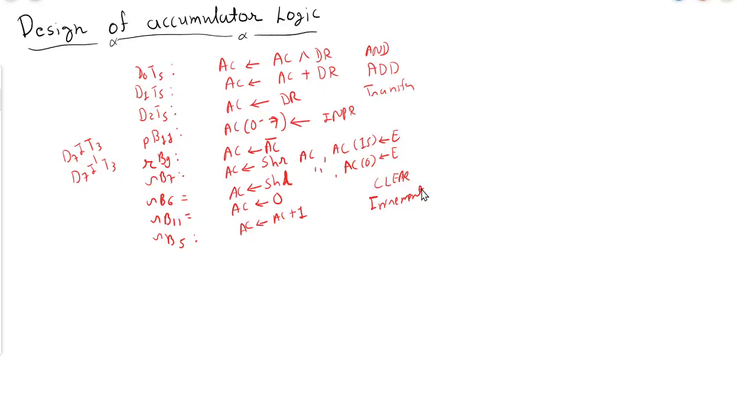So all these are operations where we are using accumulator. Now we will try to figure out the operations where we are clearing the accumulator, where we are incrementing the accumulator, and where we are loading the value of accumulator. In that case, this will be input to clear, this will be the input to increment operation, and rest of all we will load value into accumulator. This will be input to load.